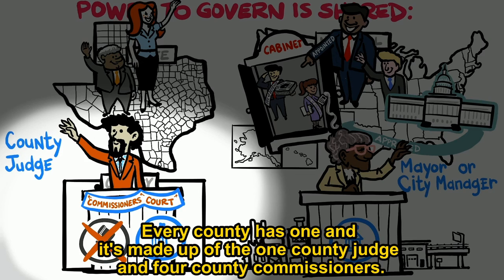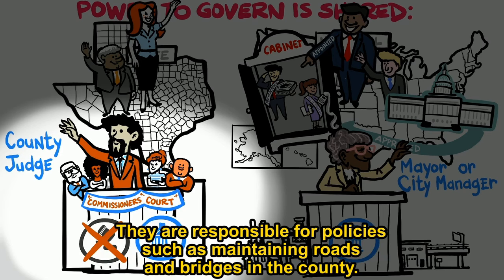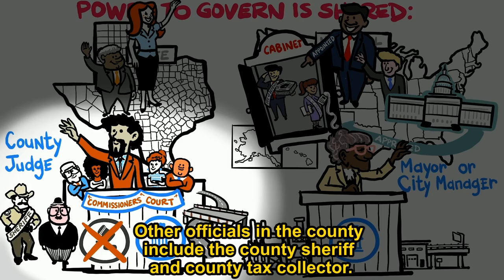Every county has one, and it's made up of the one county judge and four county commissioners. They are responsible for policies such as maintaining roads and bridges in the county. Other officials in the county include the county sheriff and county tax collector.